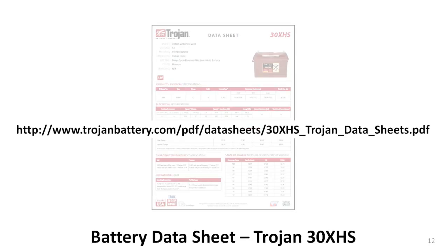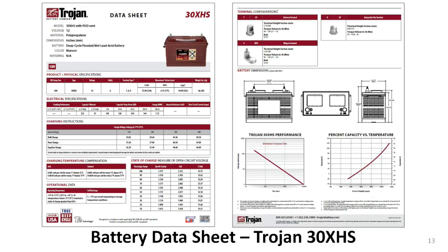I'll discuss one section of the sheet at a time and put that section on the screen as I talk about it, but I suggest that you download your personal copy from the web at the address shown above. This particular data sheet is composed of two pages and contains quite a lot of information in the form of tables, photos, drawings, and graphs. At first glance it may seem overwhelming, but you can handle it the same way you would eat an elephant — one bite at a time.